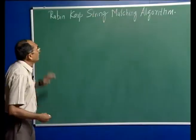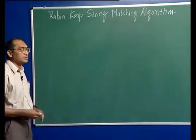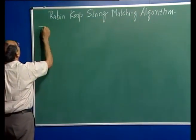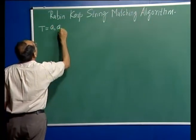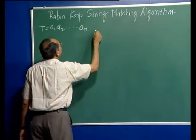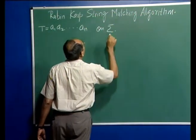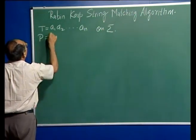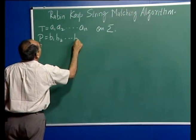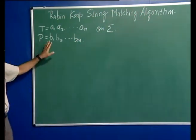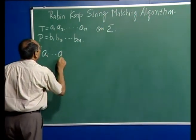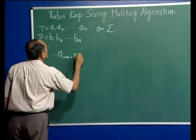Hello, today we will discuss yet another algorithm for string matching called the Rabin-Karp string matching algorithm. The problem is that you are given a text string over some symbol set sigma, and you have another string called the pattern string. We are trying to find out if there is a position i such that a_i through a_{i+m-1} is the same as p.